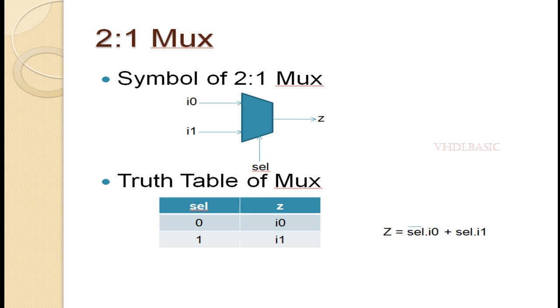There are three inputs: i0, i1, and select, and z is the output. This is the truth table of the MUX. Whenever select is 0, whatever is present in i0 will be assigned to z. Whenever select is 1, whatever is present in i1 will be assigned to z.